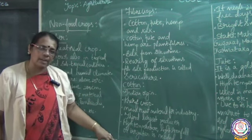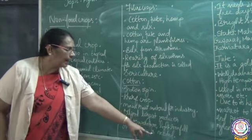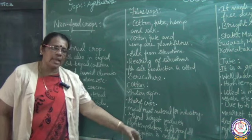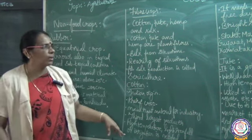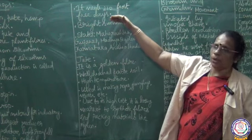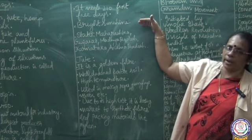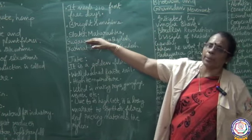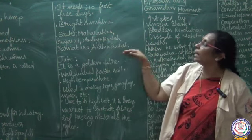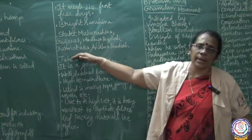For cotton cultivation, high temperature is required along with light rainfall or irrigation facilities. It needs 210 frost-free days and bright sunshine for cotton bolls. The important cotton growing states are Maharashtra, Gujarat, Madhya Pradesh, Karnataka and Andhra Pradesh.